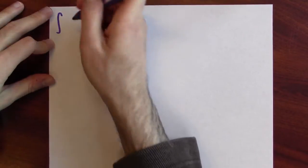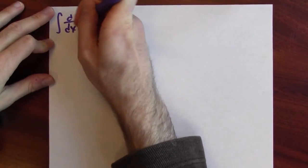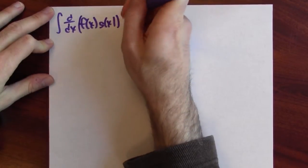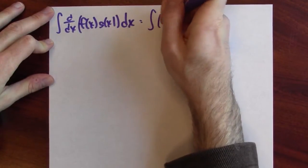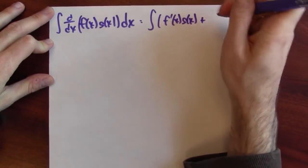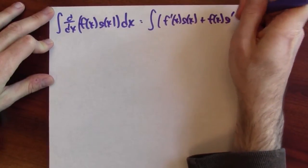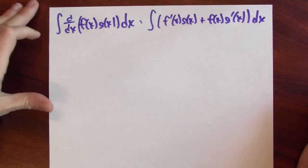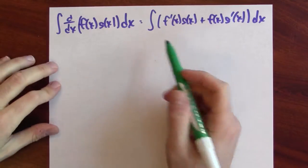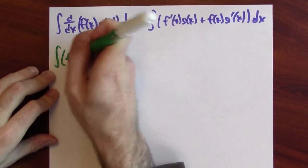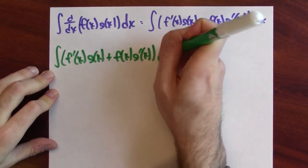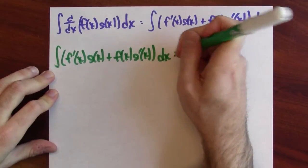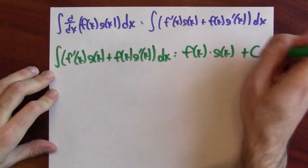The anti-derivative of the derivative of f times g is the anti-derivative of — by the product rule — the derivative of the first times the second plus the first times the derivative of the second. But the anti-derivative of the derivative is just the original function. That tells me that an anti-derivative of f′·g + f·g′ is f(x)·g(x), and I'll include a constant.